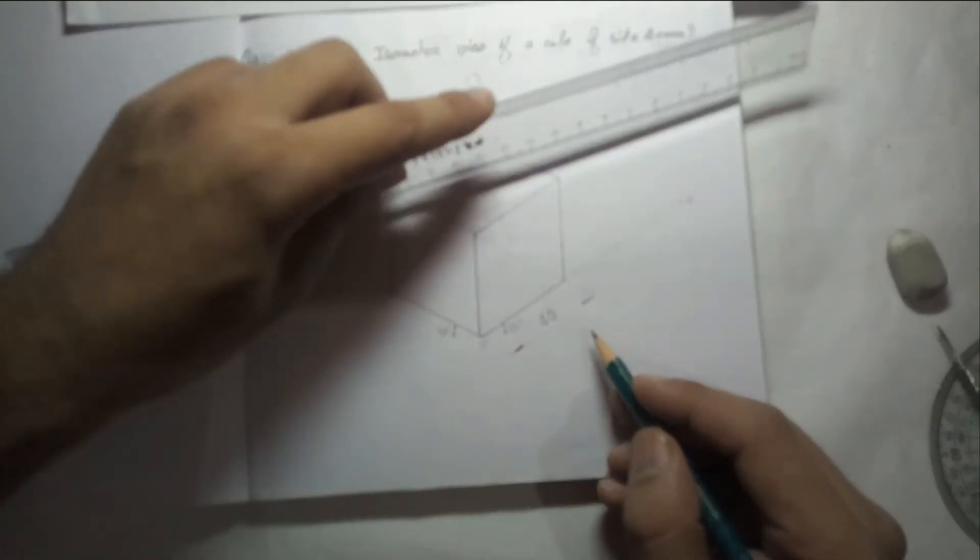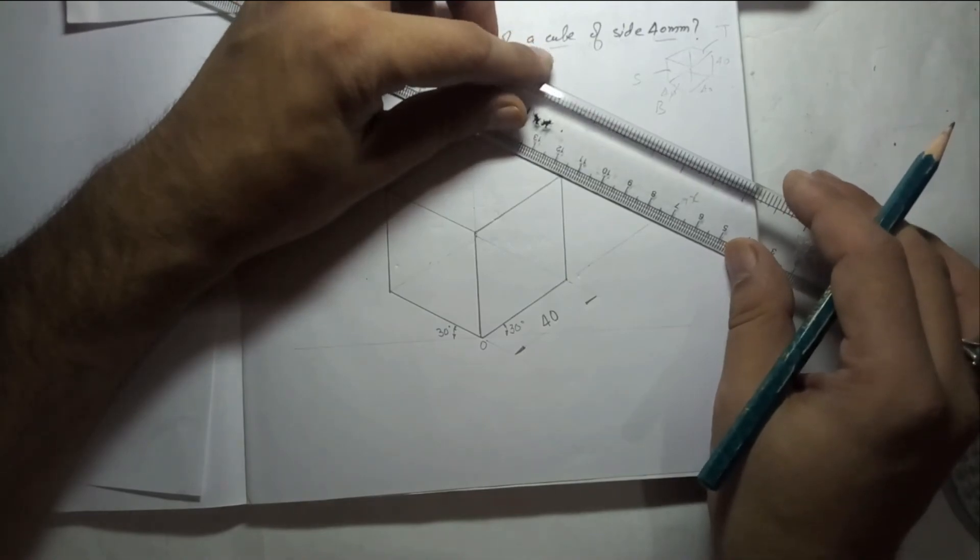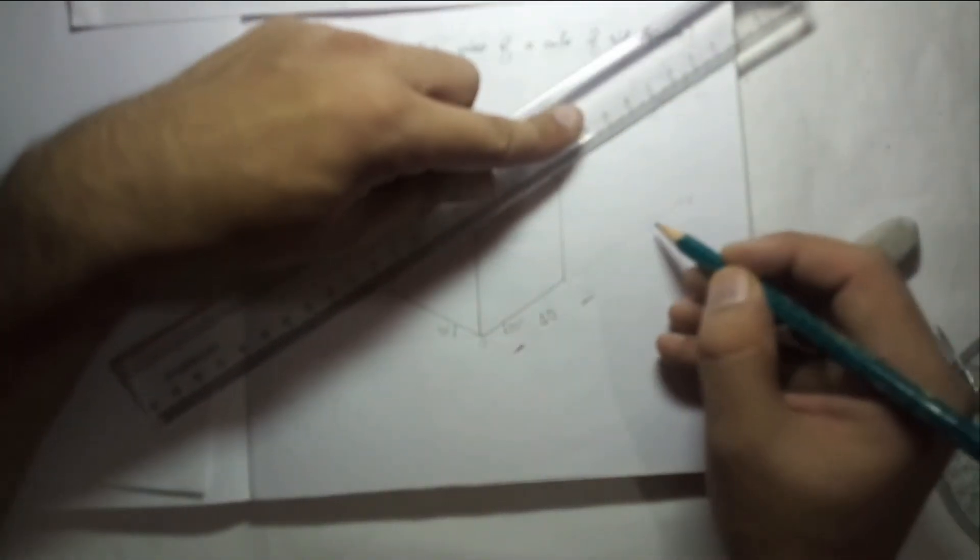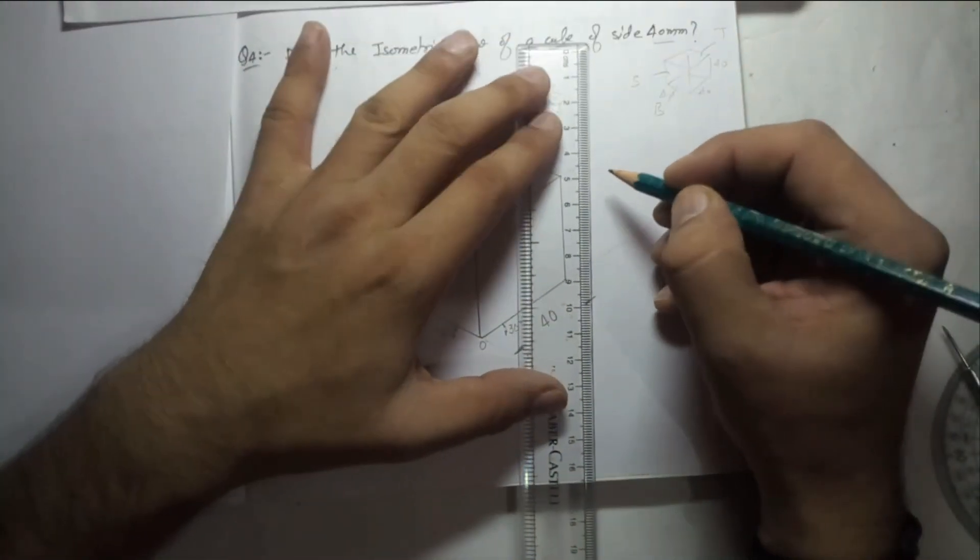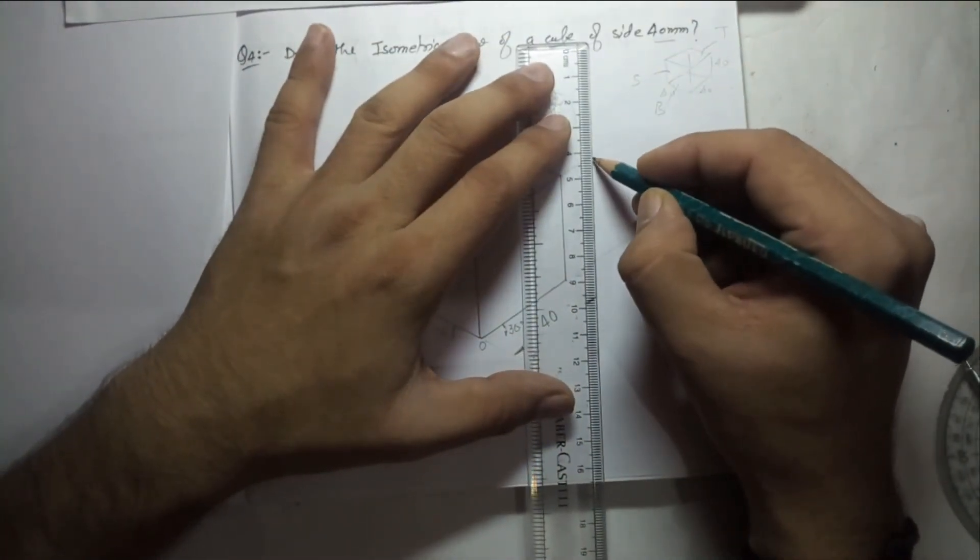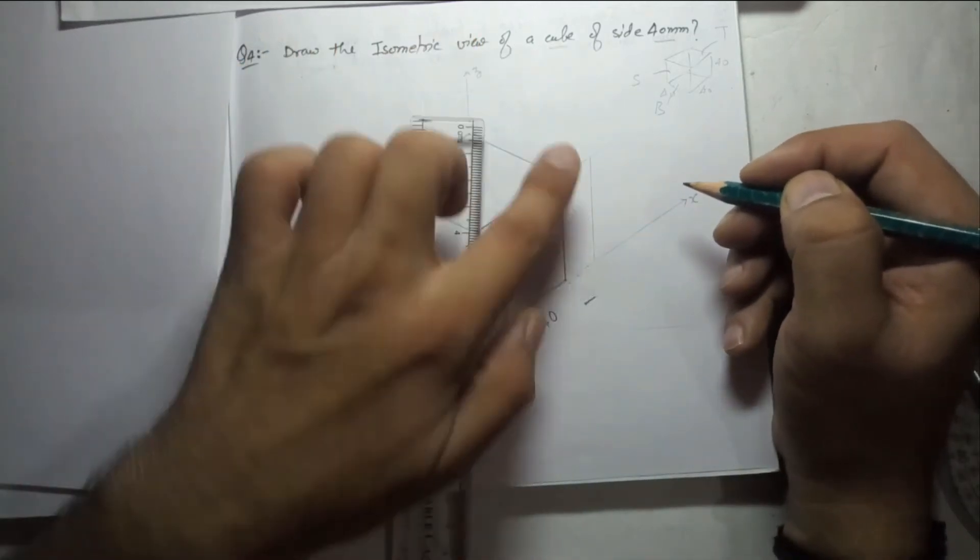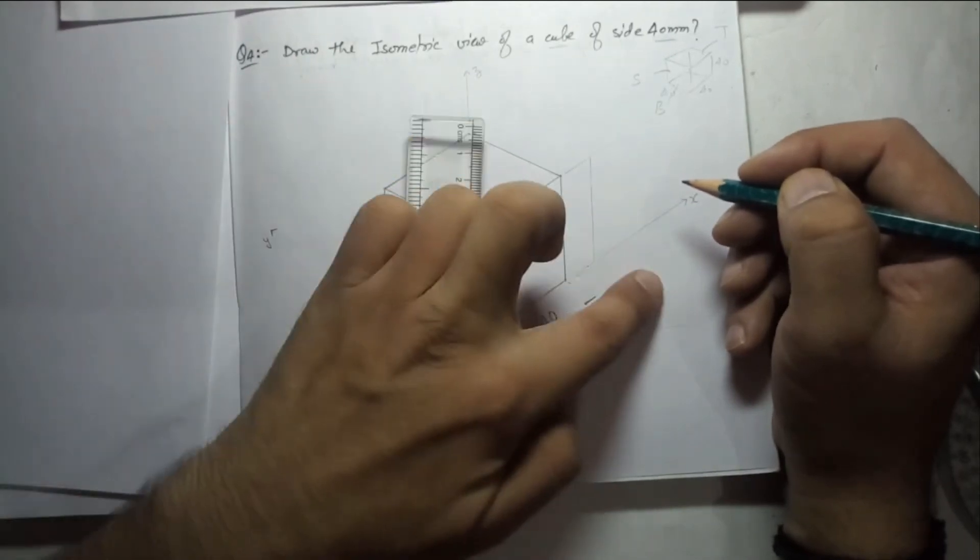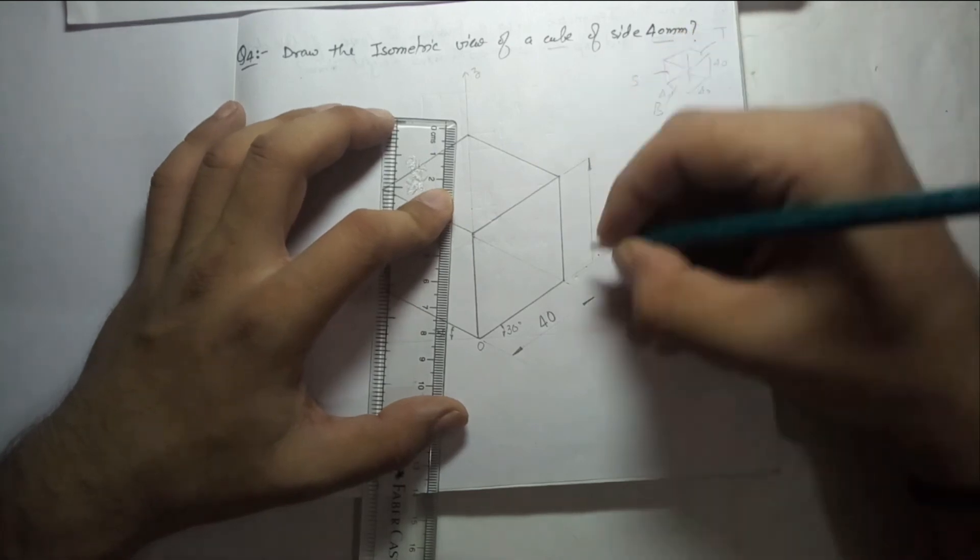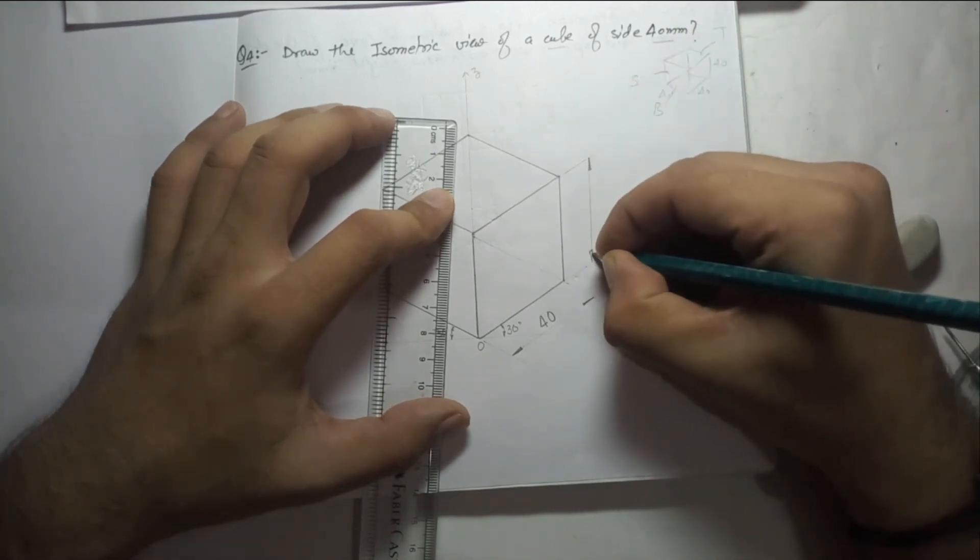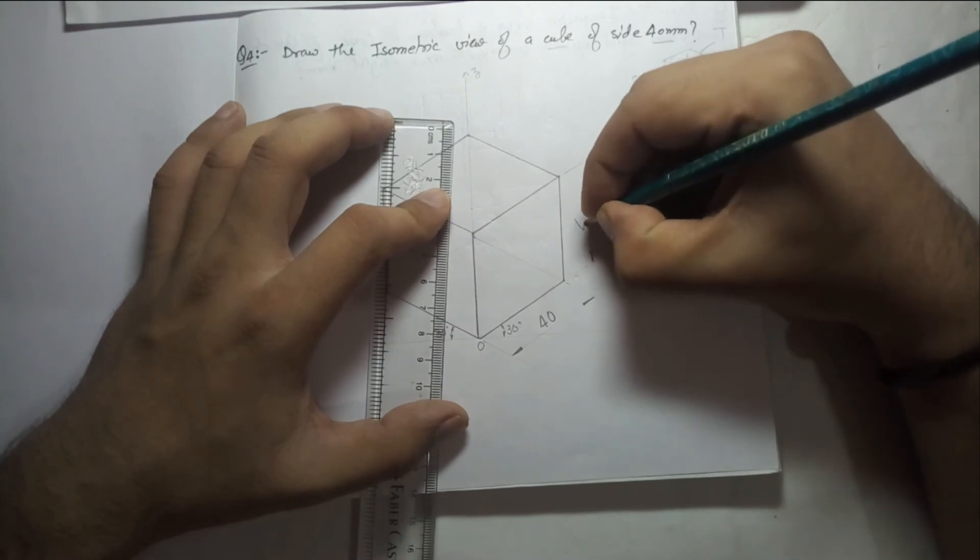Now you can take the height also. For height you can take this side also. This is OX, so extension line must be parallel to any of the axis. It's not compulsory to take a particular axis - it can be parallel to any of the axis. Like here I have taken it parallel to OX, and it might be parallel to OY. This is just your way, but the only thing is that it should be parallel to any of the axis.